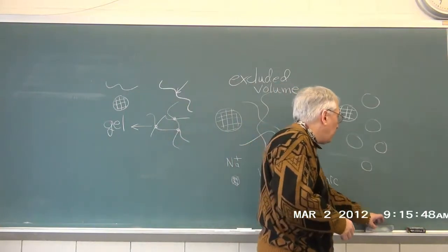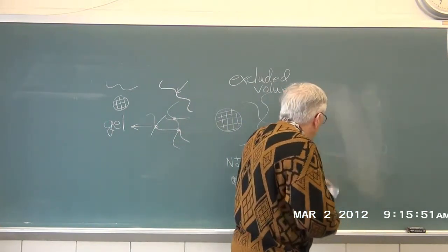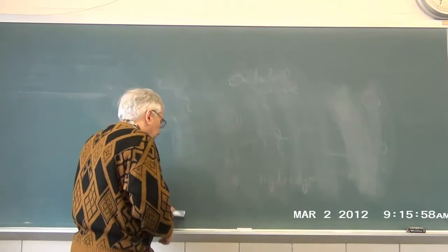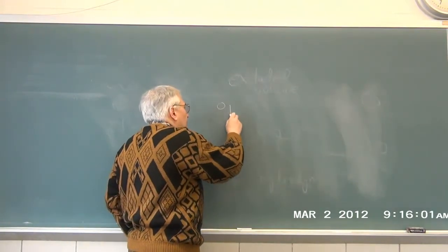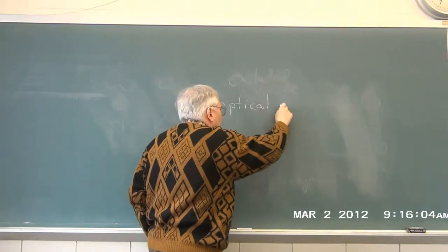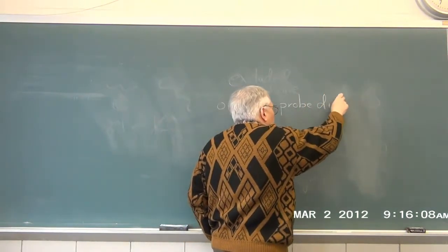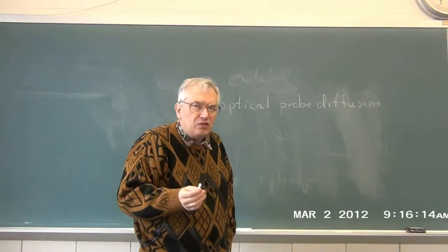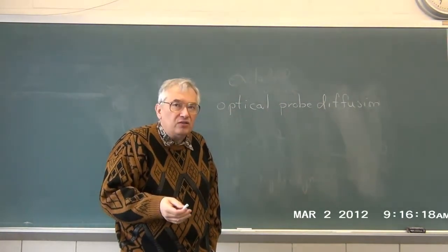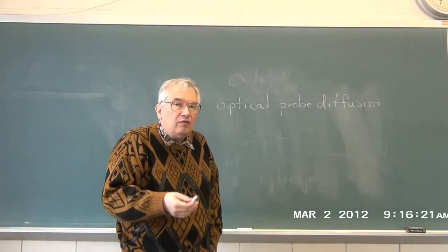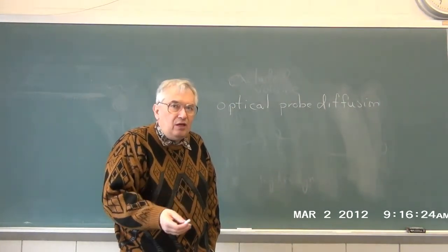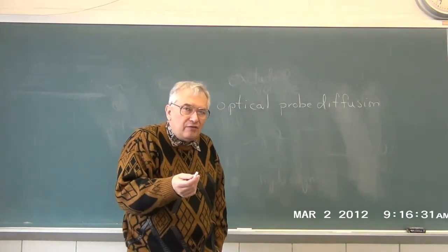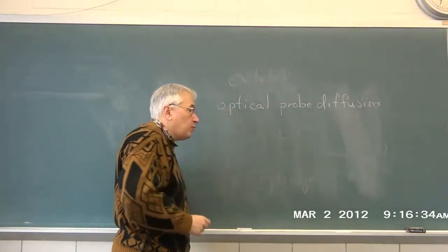We're going to be talking about probe diffusion. There is a very large literature that can be broken into three major segments. The first segment is optical probe diffusion, in which the classical probes are polystyrene spheres and silica spheres. We use one of the standard optical methods: quasi-elastic light scattering, fluorescence recovery after photobleaching, forced Rayleigh scattering, or fluorescence correlation spectroscopy to measure the diffusion of the probe through the matrix.